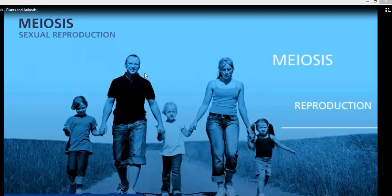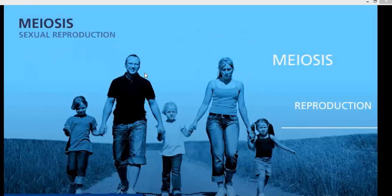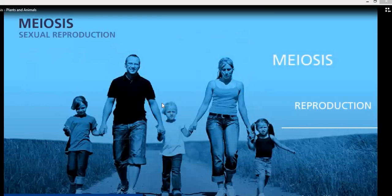Today in this video we will discuss about the process of meiosis. If you look at this family picture, you will find that these children are not very much identical in look to their mom and dad. These siblings are also not identical to each other. They are inheriting chromosomes from both mom and dad. So what is the reason that they look different? This process is mainly governed through meiosis.